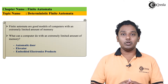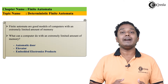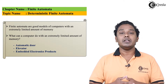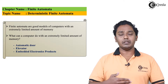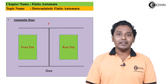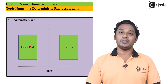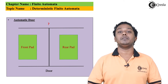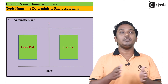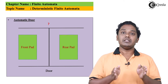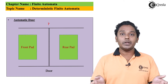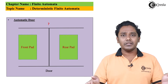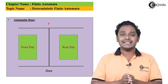An automatic door will open and close based on whether people are entering or exiting. In the front end and back end there are pads attached to the front and back side of the door. The door senses whether people are entering or exiting, and from that sensation the door decides whether to open or to close. There are two states of the door: an open state and a closed state.